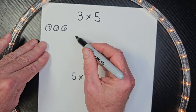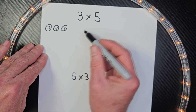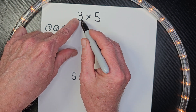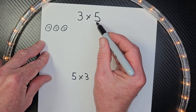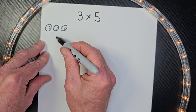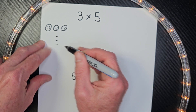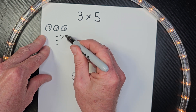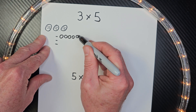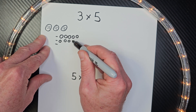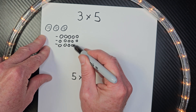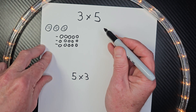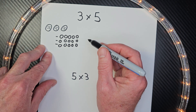Then down the line, you might learn what an array is. An array is where you draw out three groups of five in equal rows. So I'm going to do three groups of five — one, two, three. Those are my groups, and in each group there's going to be five. This is an array, but we still need to do a tape diagram.